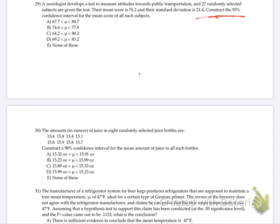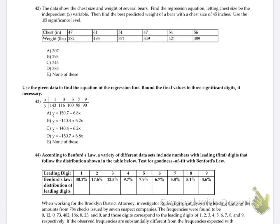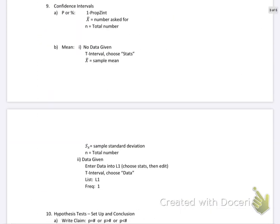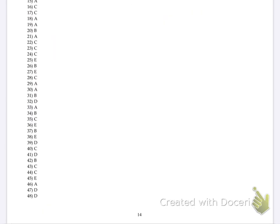So which confidence interval is it? That's what it is on the final exam notes — 9B. Confidence intervals for the mean. We're going to go T-interval, aren't we? So let's go there.